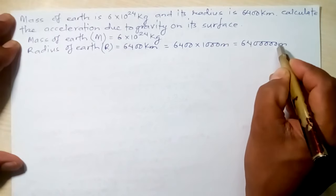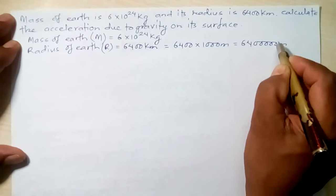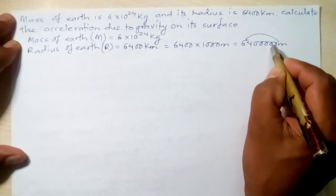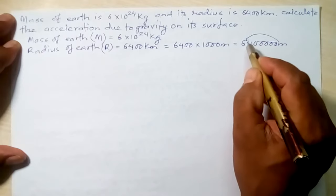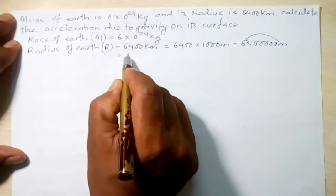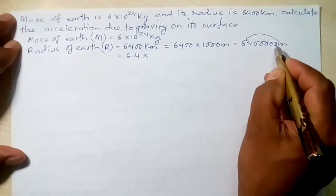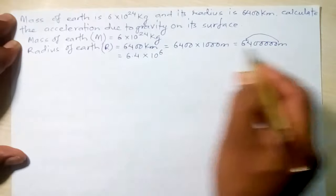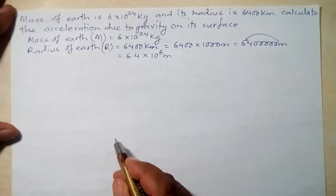This is a large number, so we write it in scientific notation. There is no decimal point, so we place it at the end. Shifting the decimal point six digits to the left gives us 6.4×10⁶ meters.